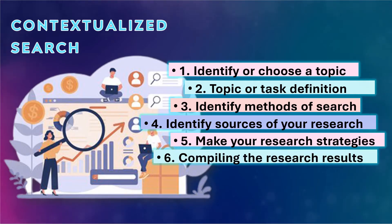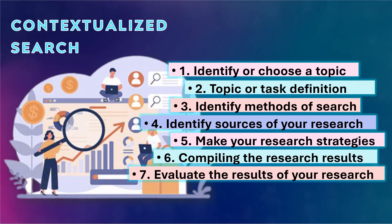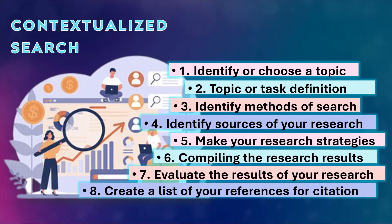Number six, compiling the research results. Strategies for handling large amounts of data are necessary for you to be able to sift through them for your final analysis — either to keep or delete them. Number seven is to evaluate the results of your research: check them for usefulness, relevance, reliability, and accuracy. Number eight is to create a list of your references for citation. It is good practice to keep your sources updated for your footnotes and bibliography, as this will save time going back to the internet later.